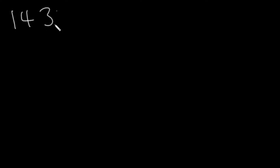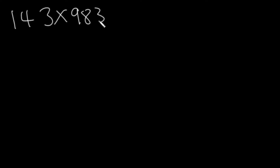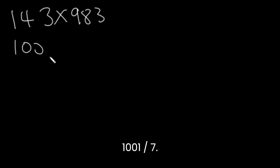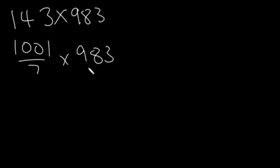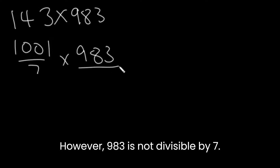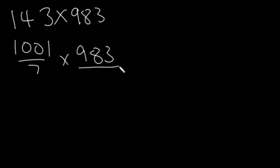Let's look at another example. Let's say we have 143 times 983. Again, we replace 143 with 1001 over 7. However, 983 is non-divisible by 7, so we have to find the remainder.